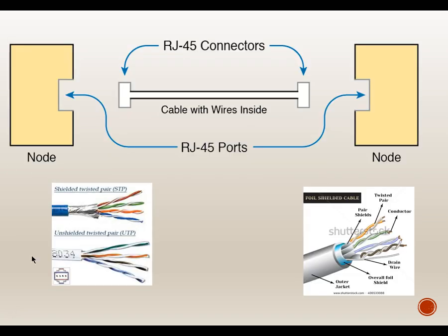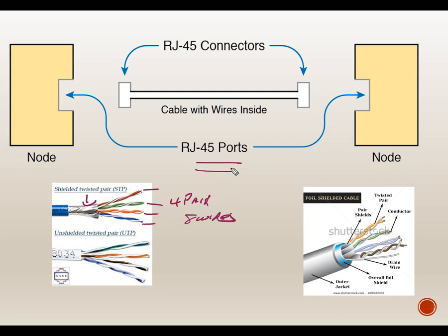Looking at twisted pair cable: shielded twisted pair (STP) has a foil shield around it, while unshielded twisted pair (UTP) does not. Each cable has four pairs — eight wires total. The pairs are twisted, and with shielded twisted pair the pairs are also twisted within the foil. With parallel wires, electromagnetic interference induces noise; twisting the pairs causes the signals to cancel each other out, reducing noise.